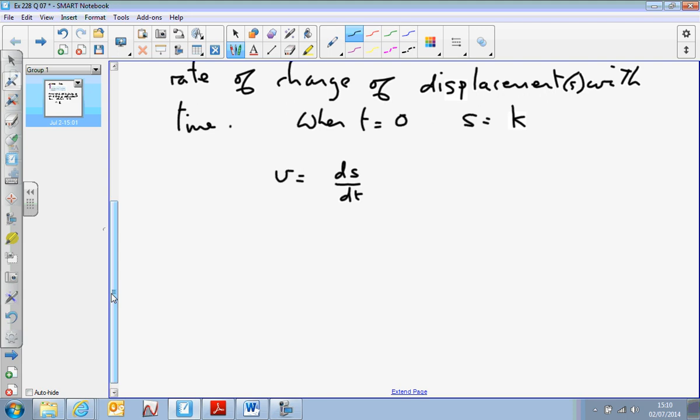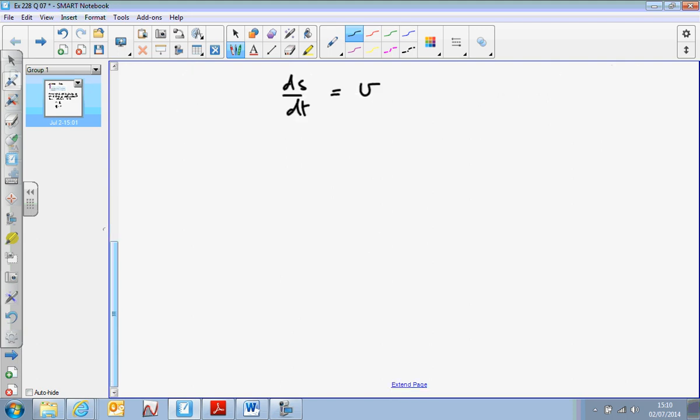So integrating both sides, ds by dt equals v. Let's bring the dt over to the right hand side. So ds equals v dt. So effectively now what I'm going to do is integrate both sides as we've done before.